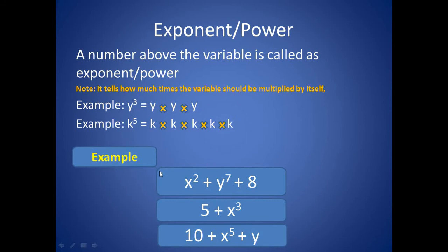And in this expression, 2 is an exponent and 7 is an exponent. And in this expression, 3 is an exponent. And in this expression, 5 is an exponent.